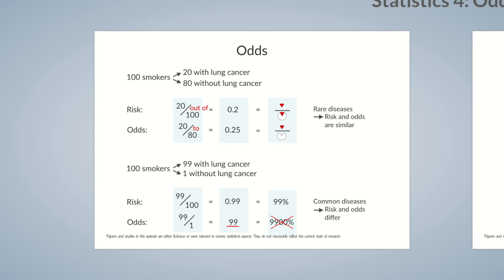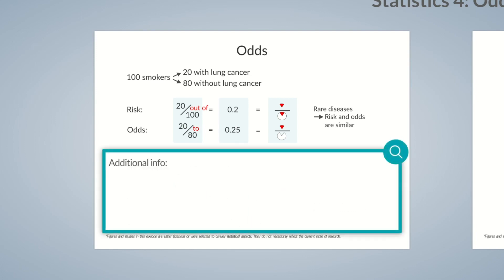Now, we'd like to show you some additional information on risk and odds values that may come in handy. Risk and odds values can be mutually converted. The odds of developing a disease is identical to the risk divided by 1 minus the risk. In our example, this would be 0.2 divided by 1 minus 0.2 — so 0.2 divided by 0.8 equals 0.25. As you can see, you'll get the same odds value previously calculated.